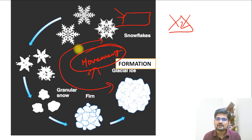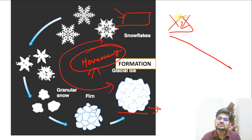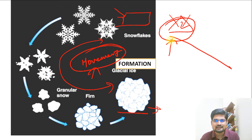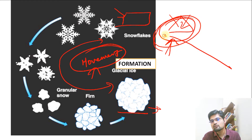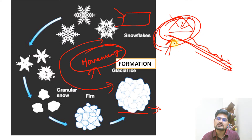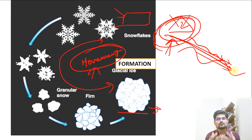Now let's learn about landforms formed due to the movement of glaciers. Glaciers are found on higher slopes — mostly above 4,000 meters in India, and the world average is around 2,500 to 3,000 meters above sea level. When glaciers are on higher slopes, there is gradient and movement, which triggers both erosion and deposition, forming various landforms.